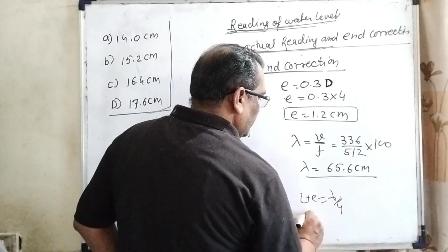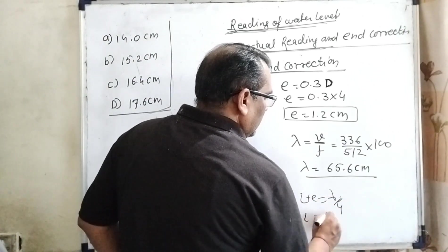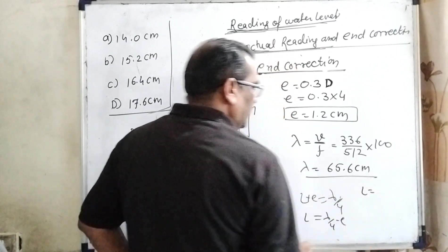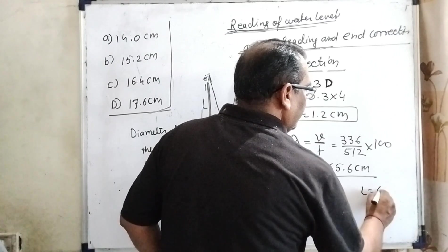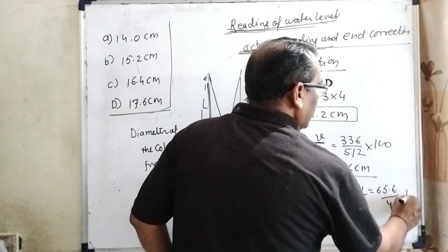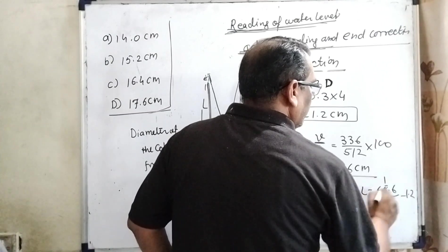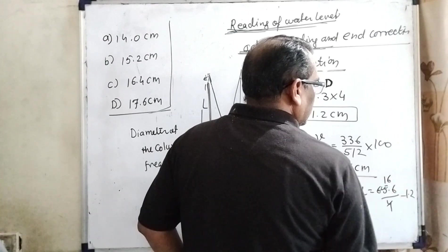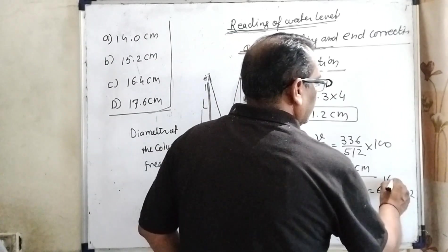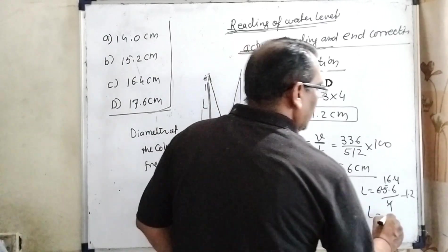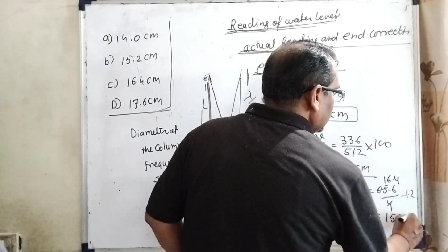Now substitute this value. L equals lambda by 4 minus E. What is the value of lambda? 65.6 divided by 4 minus 1.2. Four ones are four, four sixes are 24, and this is 0.4. So then L equals 15.2 cm.